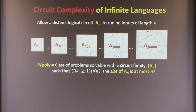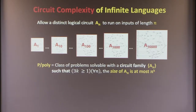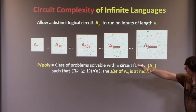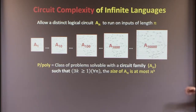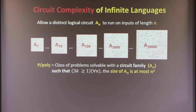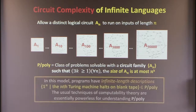So I might have an infinite number of different programs, a different program for each input length, but for any fixed input length the program is of size at most polynomial in the input length. Here I'm studying how the size of the computation scales with the input, not saying there's a specific algorithm that's going to run on everything.